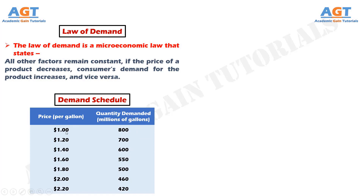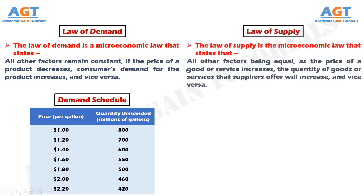According to the law of demand, as the price increases, the demand for gasoline falls, and as the price decreases, the demand for gasoline increases. The Law of Supply is the microeconomic law that states that, all other factors being equal, as the price of a good or service increases, the quantity of goods or services that suppliers offer will increase, and if the price decreases, the quantity supplied will decrease.